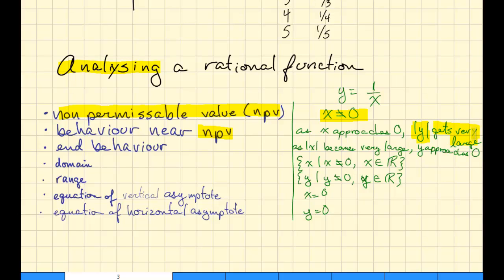And then we talk about the end behavior of the function. So as the absolute value of x gets large, either far off to the right or far off to the left, then we can say that the y value approaches 0. We talk about the domain and range. So all the values of x such that x is not equal to 0, and y is not equal to 0 for range. The vertical asymptote is at x equals 0, and the horizontal asymptote is at y equals 0. The only thing that's new here is this language about what the behavior is like near the non-permissible value and the end behavior.